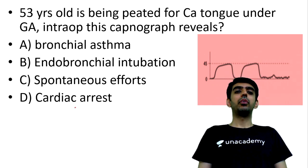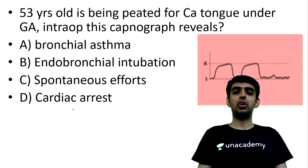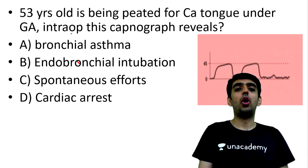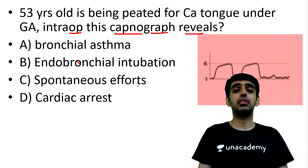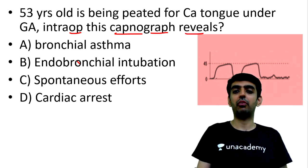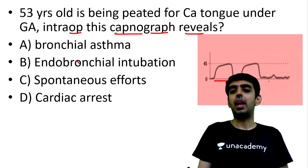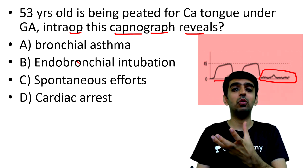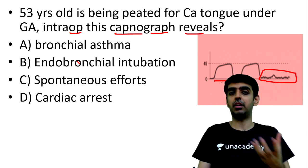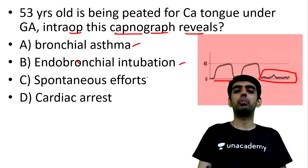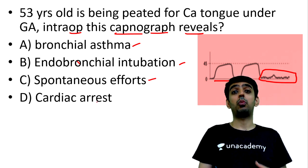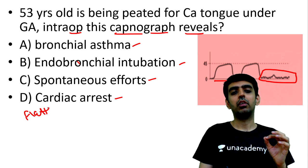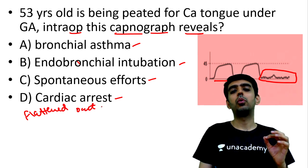Question 4: a 53-year-old patient is being operated on for carcinoma tongue under general anesthesia. The intraoperative capnograph shows a normal waveform and then suddenly there is a complete loss of capnographic waveform — a flattened capnogram. Is this due to bronchial asthma, endobronchial intubation, spontaneous patient effort, or cardiac arrest?